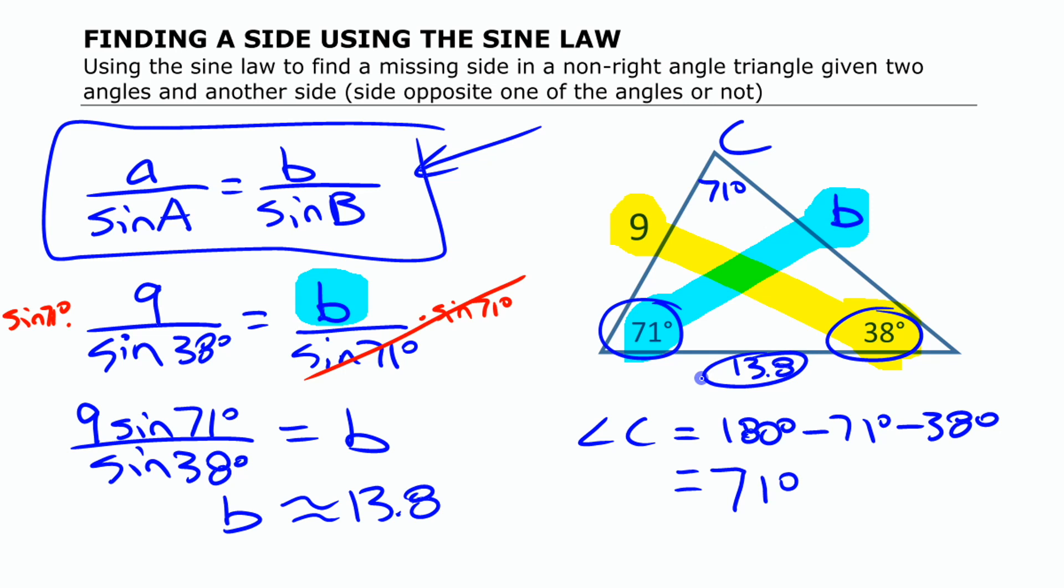All right, so that is using the sine law to find a missing side in a triangle, essentially the same as the sine law.